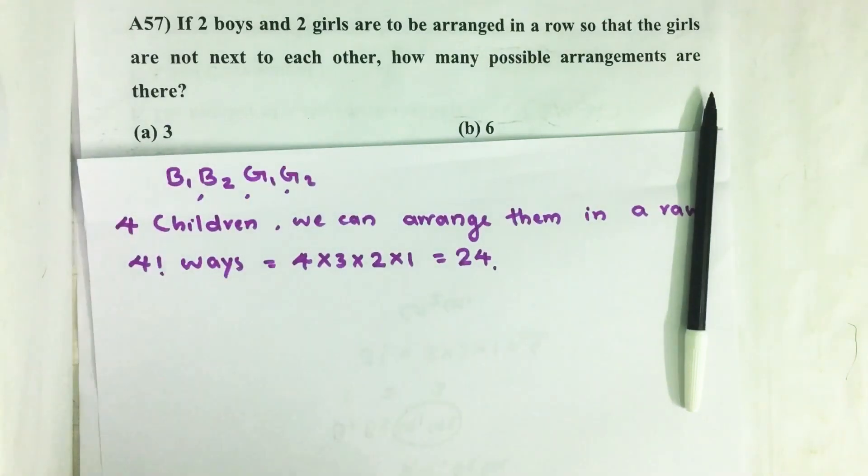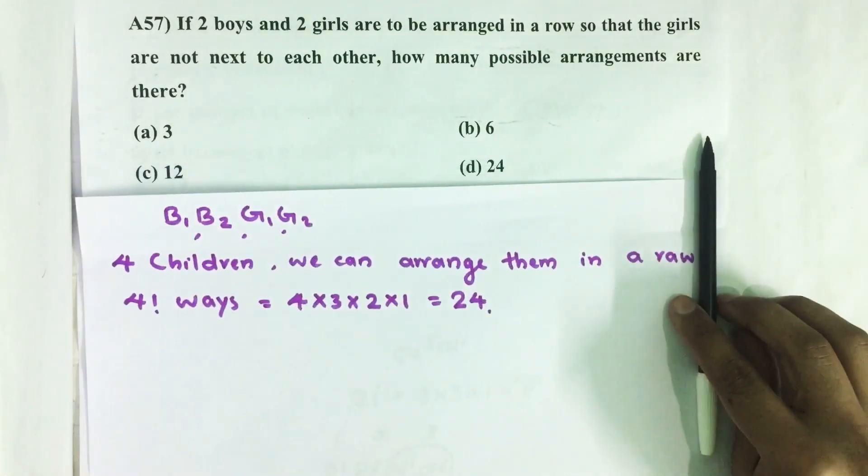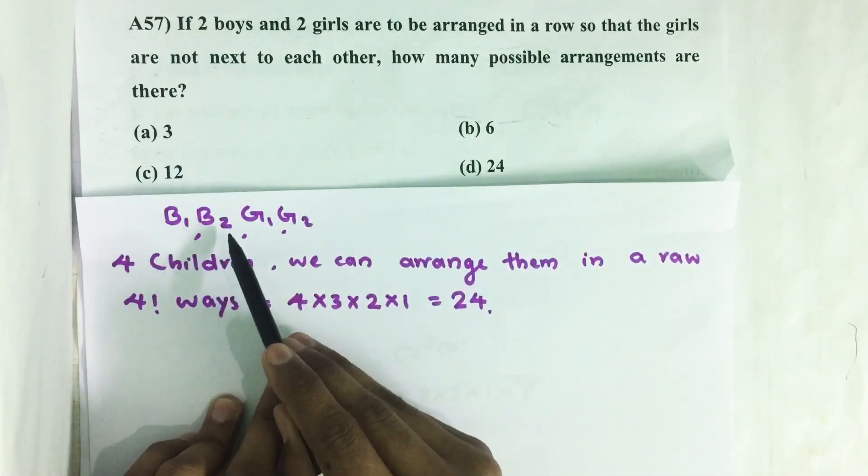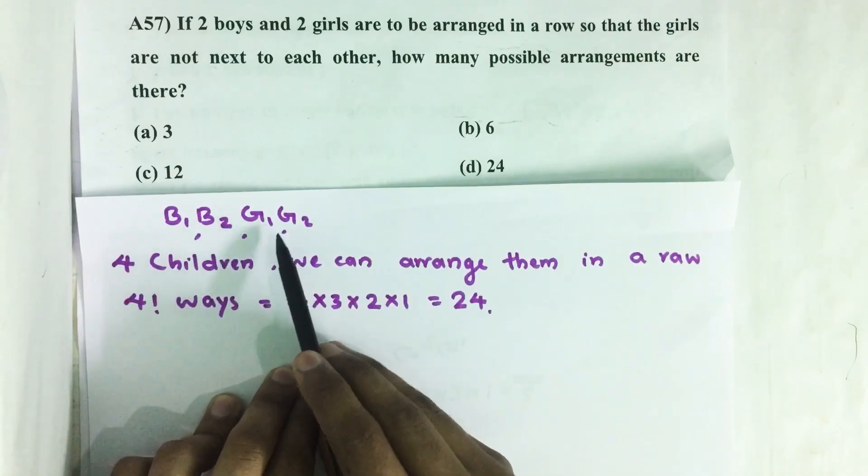Hello everyone, here I am going to solve 2017 CSAT question number 57 from question paper series A. If two boys and two girls are to be arranged in a row so that girls are not next to each other, how many possible arrangements are there?